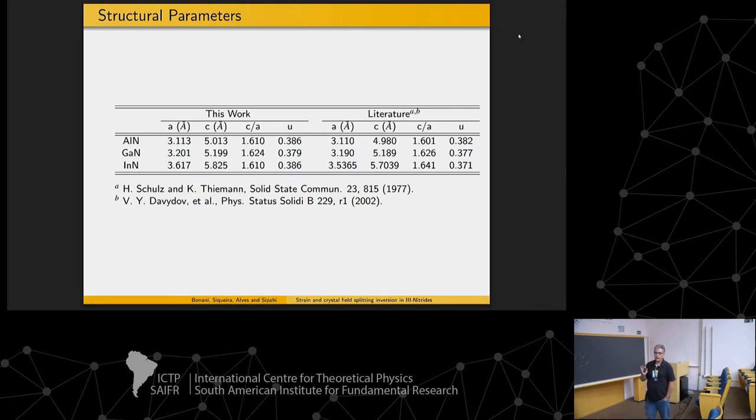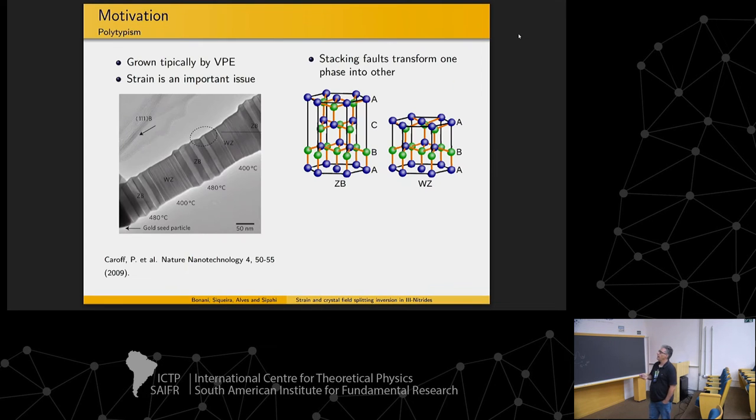So at first, if I'm trying to talk about strain, I will need to get sure that the parameters are well calculated. I forgot to say something. Let's go back. This here, this kink, is an indication that in zinc blend the strain is not released easily.